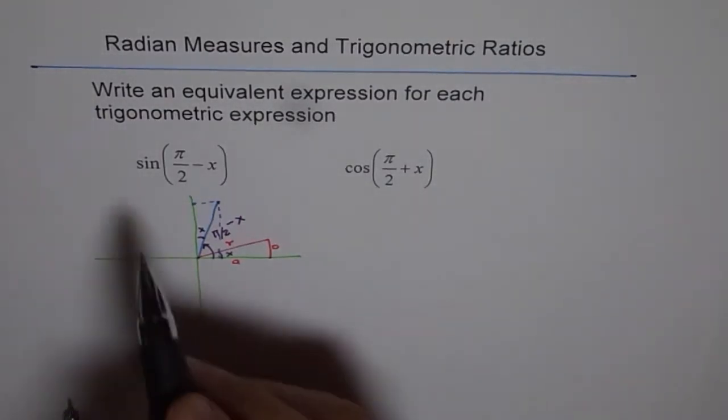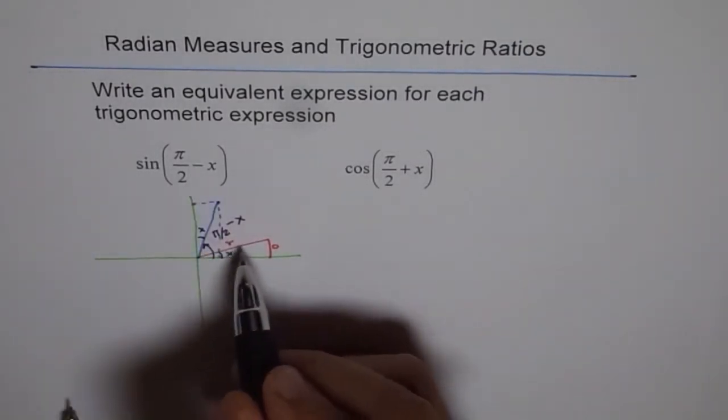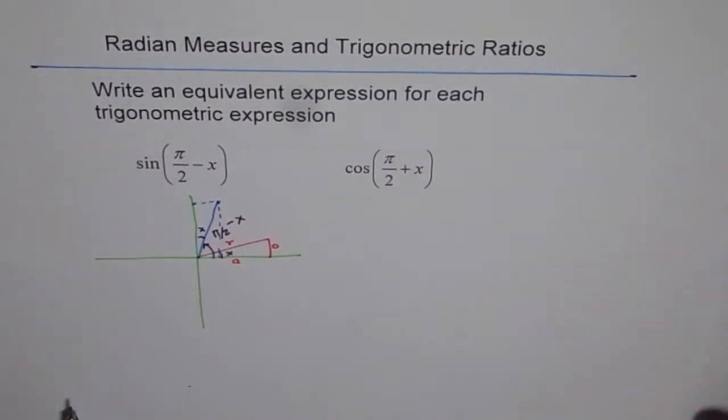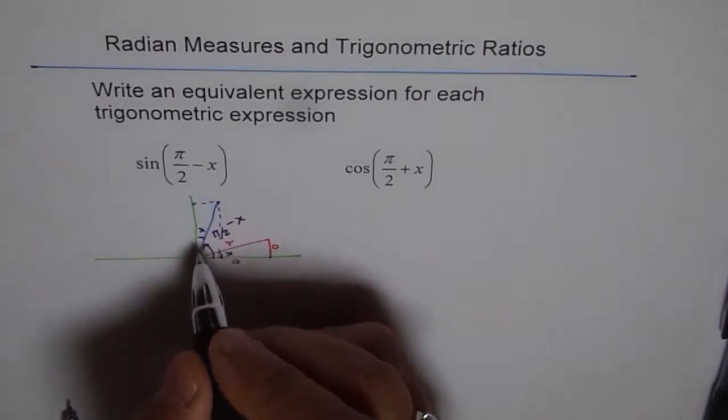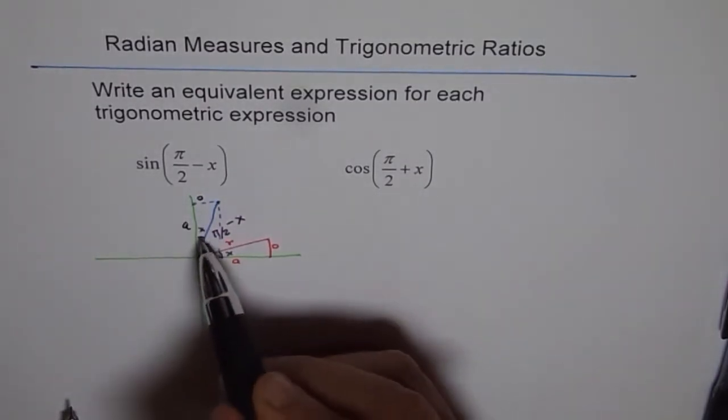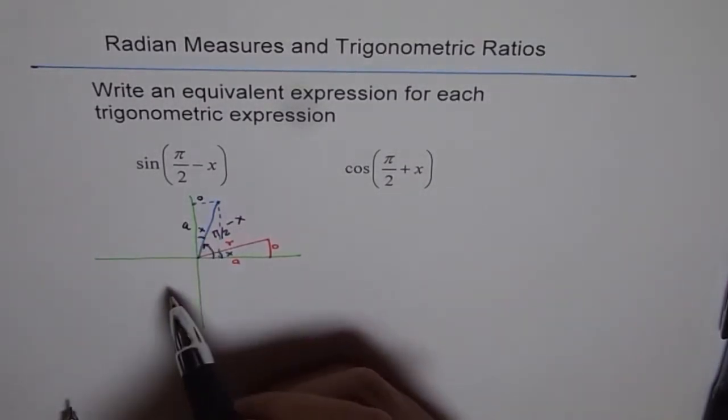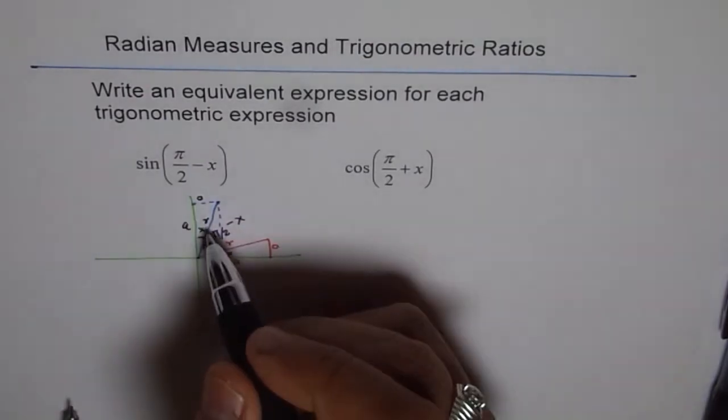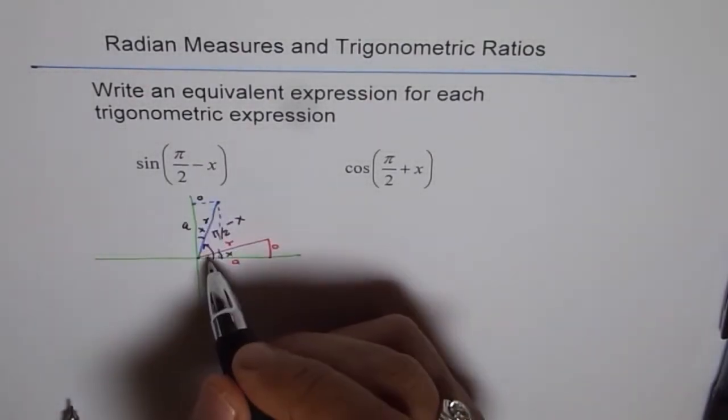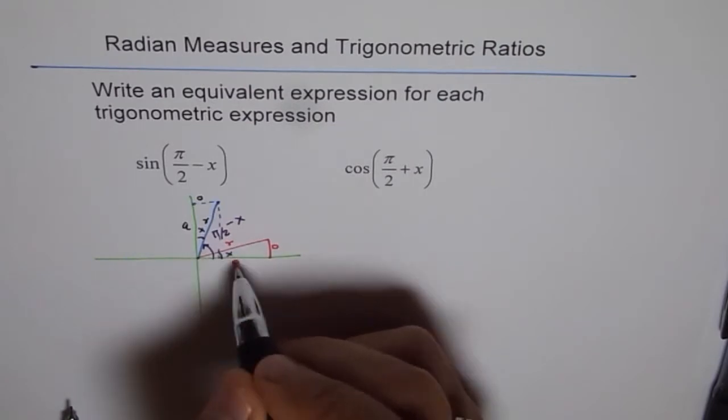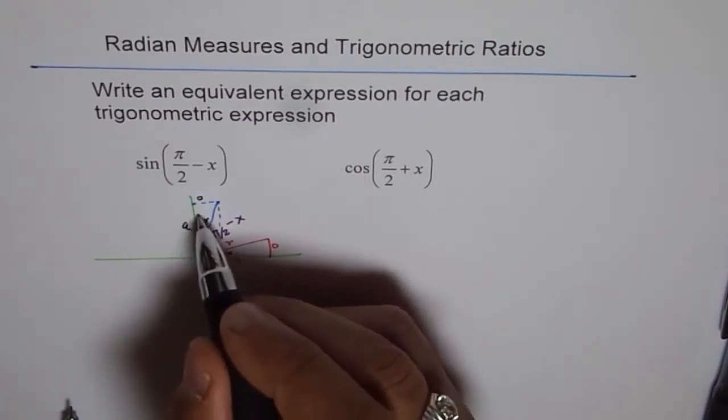Let me drop a perpendicular from here. You can consider this triangle. Both are same. You can see these two triangles are congruent triangles. So whatever we do for this triangle, same is true for here. Now, what do we have? What is sine π/2 minus x? If we have the same radius, then what really happens is that this side, which we are calling as A, becomes equivalent to this side.